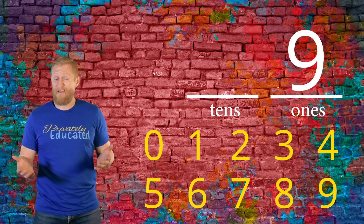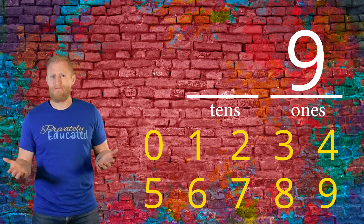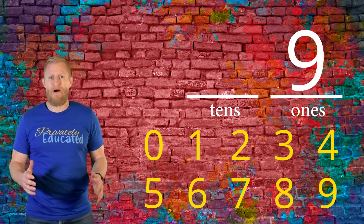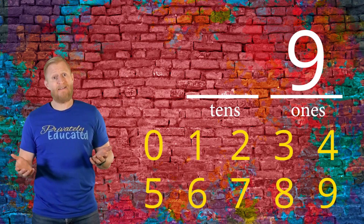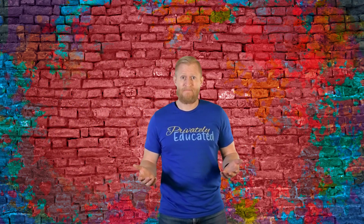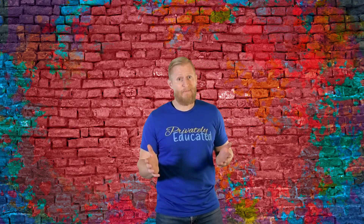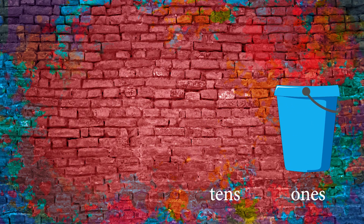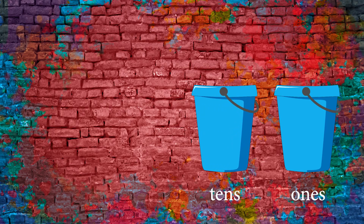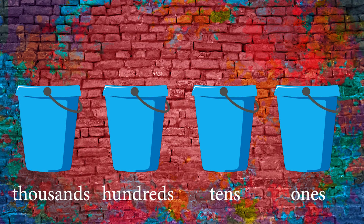Is nine the highest we are allowed to count? Of course not. You know that we can count much higher than that. That's where place values come in. I'll give a quick example for you to visualize place values. So for this example I'm not going to call them place values — let's call them place buckets. In the ones place we'll put a bucket, in the tens place we'll put another bucket, and we'll put buckets for the hundreds and thousands places as well.